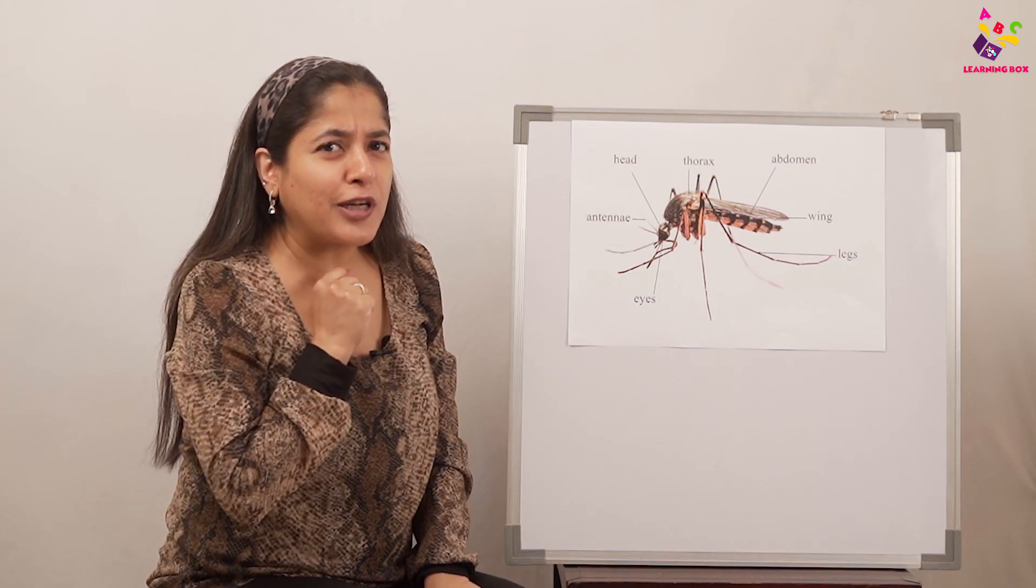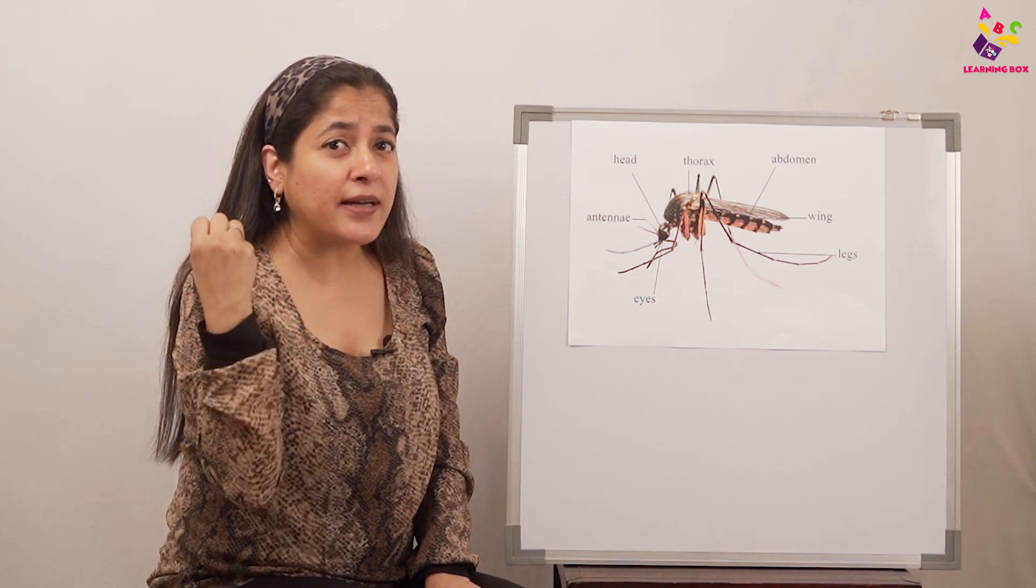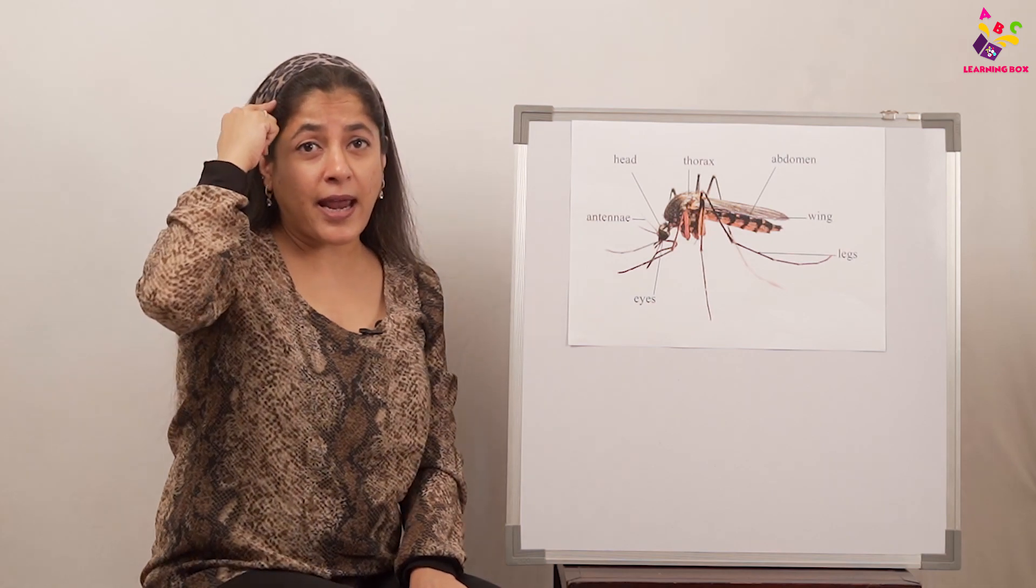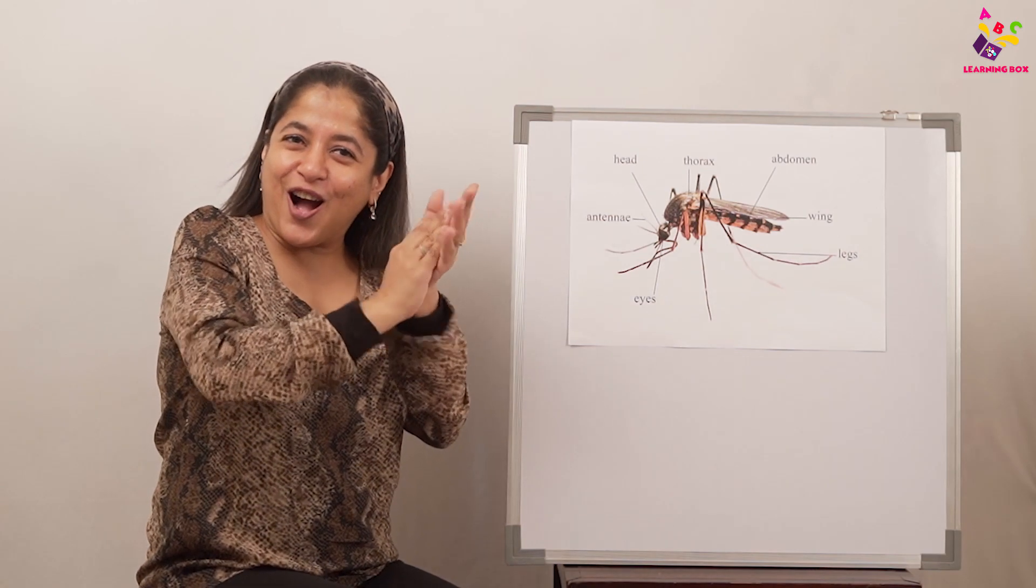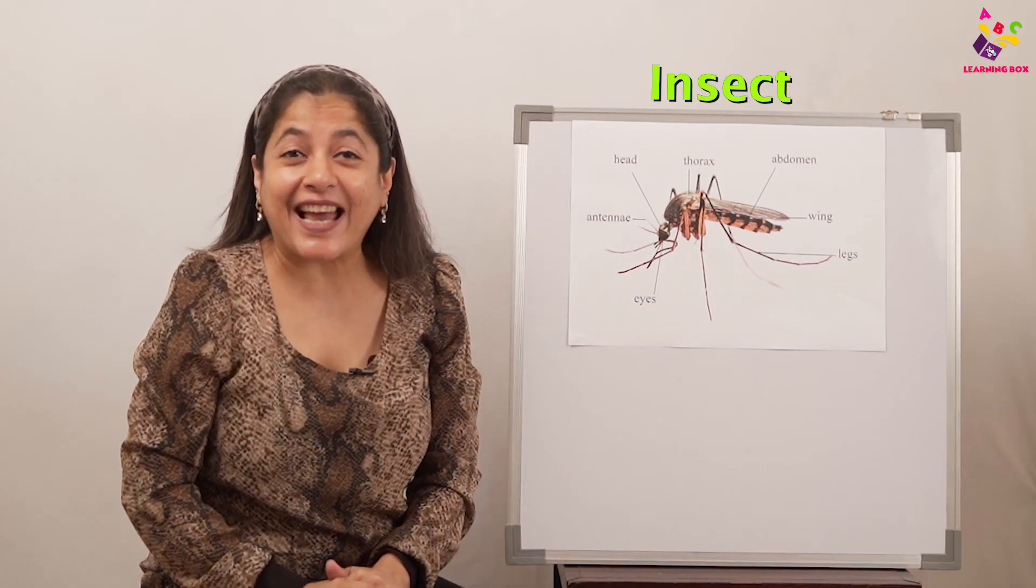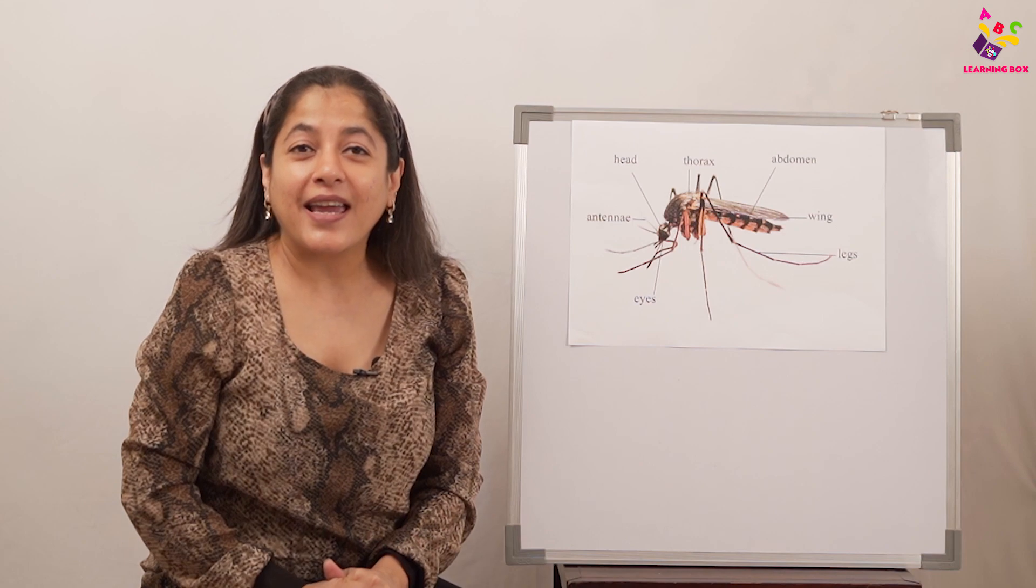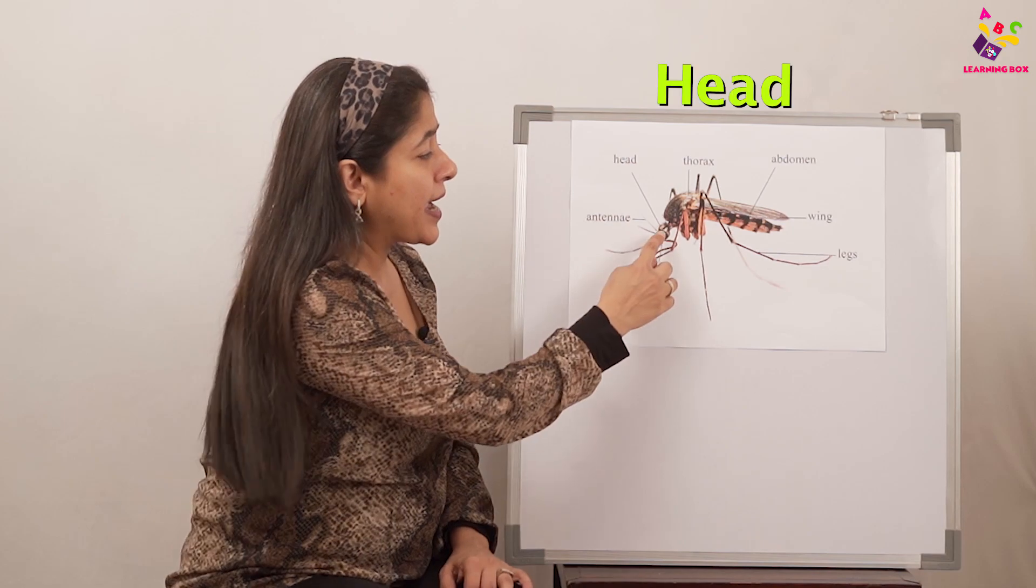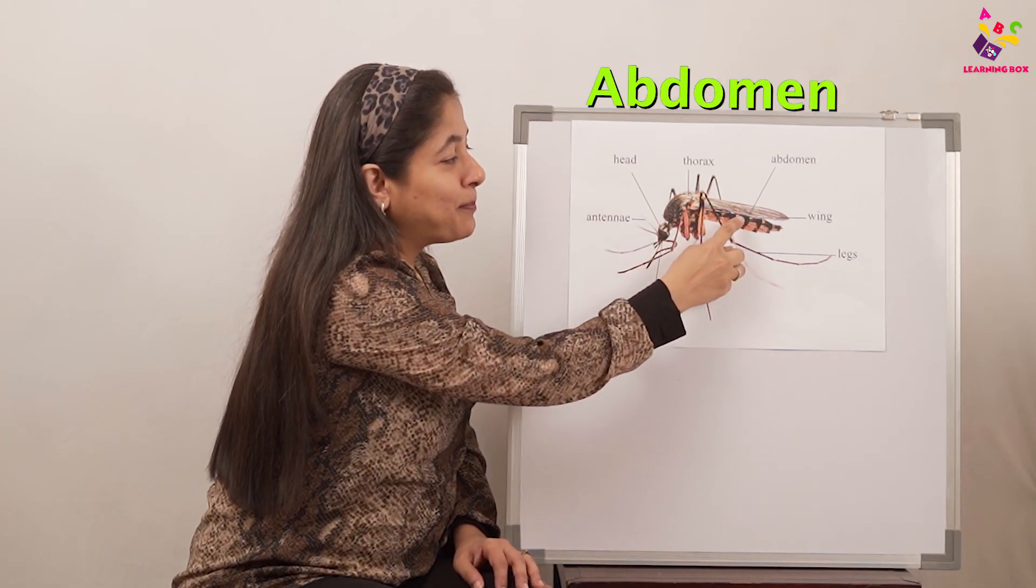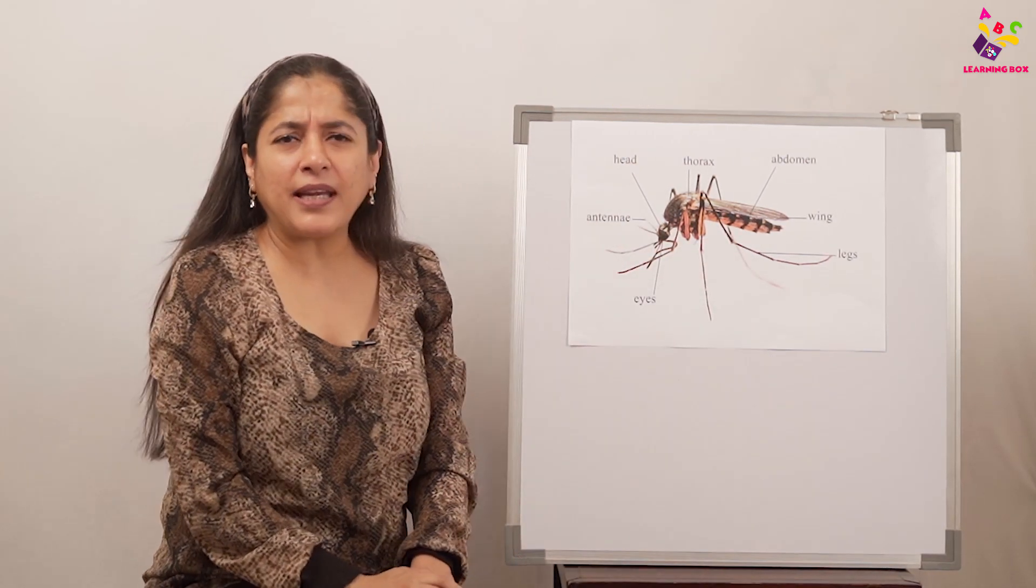Come on, tell me which are those creatures whose bodies are divided into three parts: head, thorax, and abdomen? Excellent job! Those are insects. Insects' bodies are divided into three parts: head, thorax, abdomen.